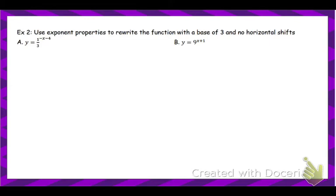We're not going to spend a lot of time looking at the graph and writing the equation, just because based off of your exponent properties, there are actually a lot of different ways you could write the exact same function with different bases. I want to show you a couple examples here. I'm going to use exponent properties to rewrite both these functions with a base of three, and show you how you can do that and still get the exact same graph.